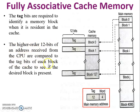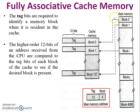The higher-order 12 bits of the address received from the CPU are compared to the tag bits of each block of the cache to see if the desired block is present. When the CPU wants data from main memory, the main memory block is moved into cache memory, and the first 12 bits of that block's address are stored in the tag bits.